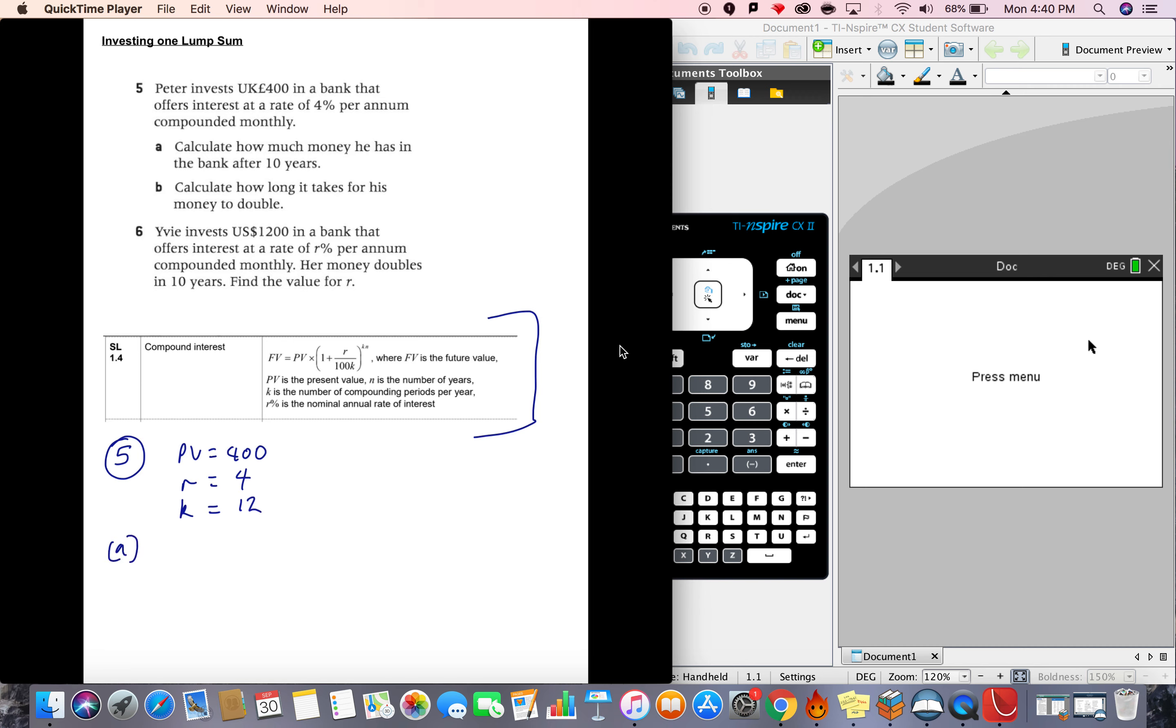And part A is calculate how much money he has, so that's the final value. The final value is present value times 1 plus R over 100 times K, to the power of K times n, and the number of years for part A is 10.